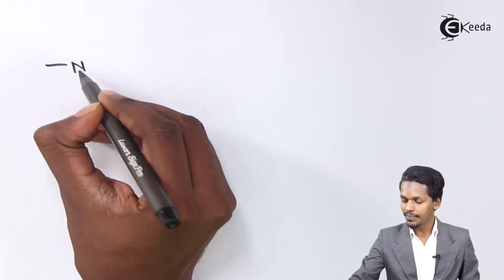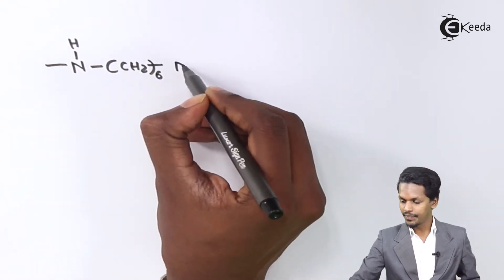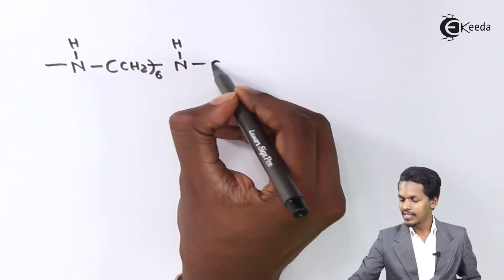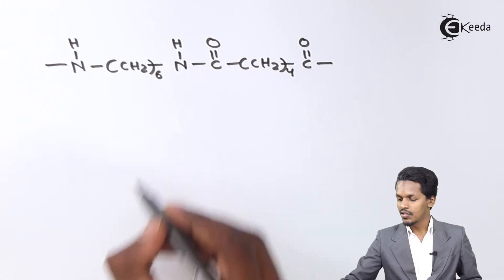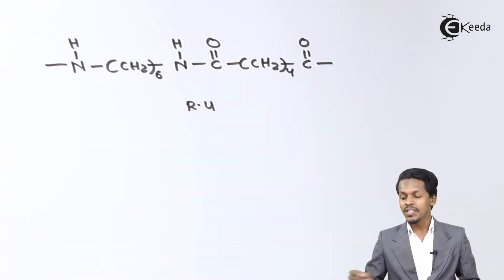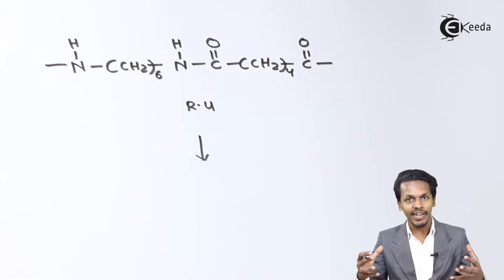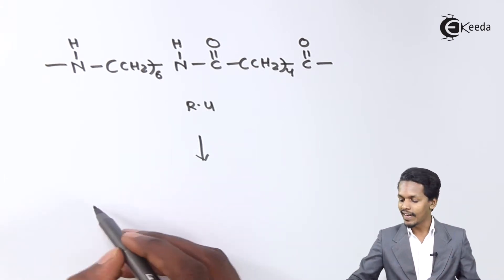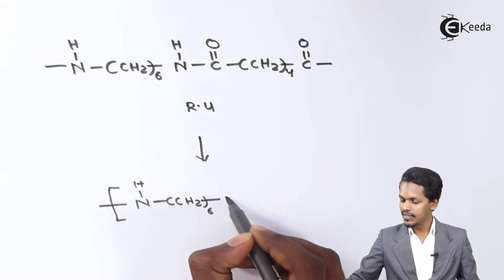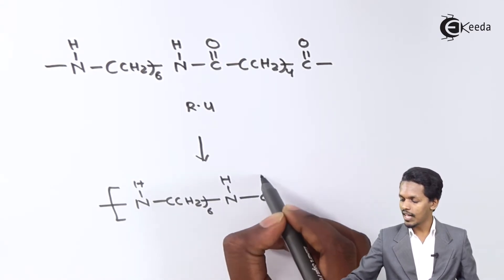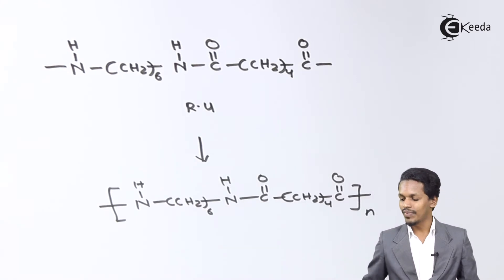The repeating unit obtained has the structure: -NH-(CH2)6-NH-C(=O)-(CH2)4-C(=O)-. This contains an amide linkage. This repeating unit continues as the condensation reaction proceeds, building up the polymer chain.